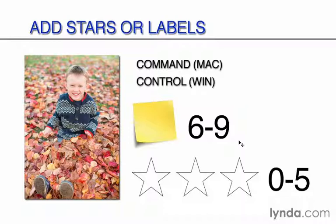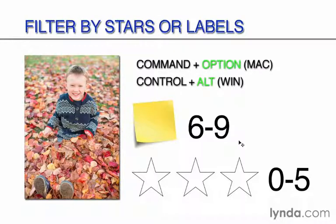If we want to filter or find our photographs based on their star or label rating, press Command Option on a Mac or Control Alt on Windows, and then click on the criteria you want to filter. For example, if you have a folder of 100 photographs and six images have a three-star rating, pressing Command Option 3 on a Mac or Control Alt 3 on Windows will show only those images. You can do this with stars or labels. I recommend you write down these shortcuts, as they are really helpful for speeding up your workflow in Bridge. Now that we've been introduced to these shortcuts, let's take a look at how all of this works in the next movie.